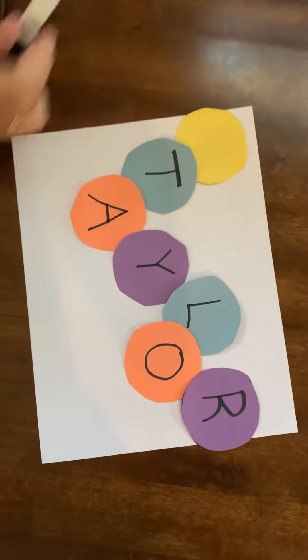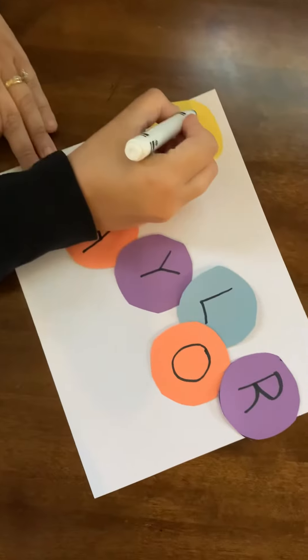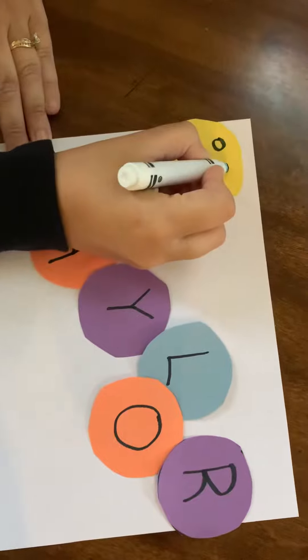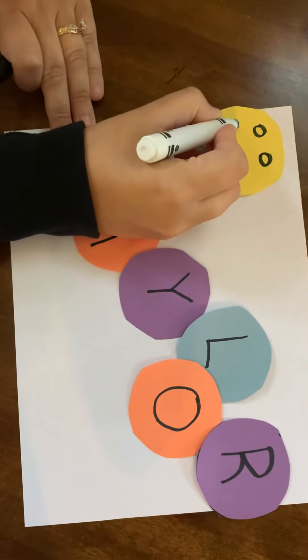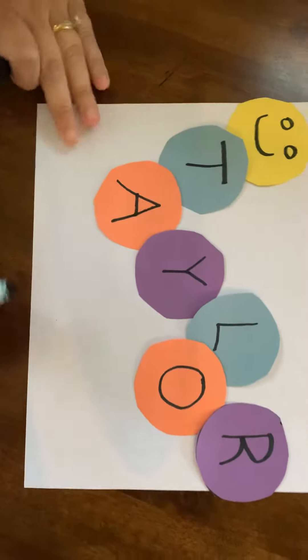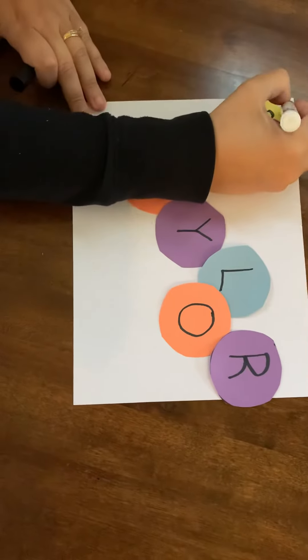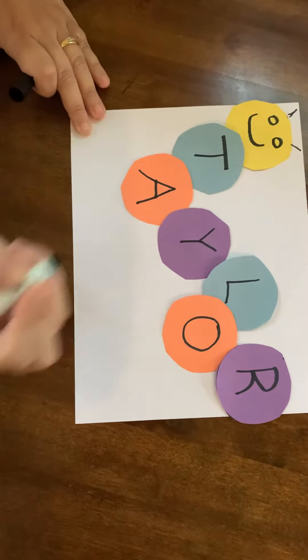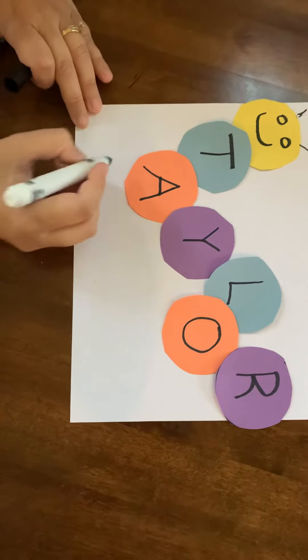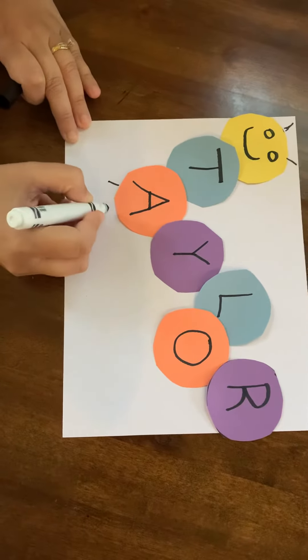Then you can have your child do two circles for the eyes. A smiley face. And then the antennas, which are just straight lines like that. And then you can put six little legs wherever you want. Straight lines.